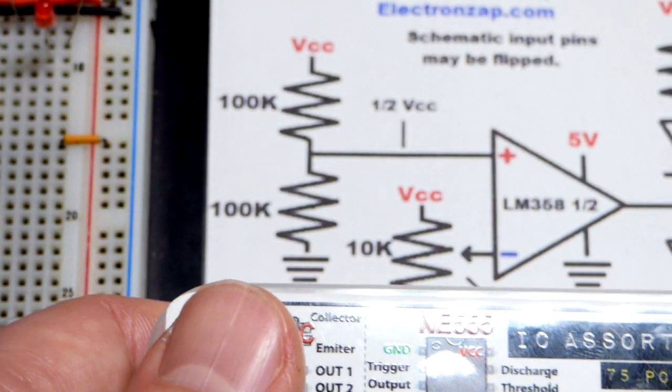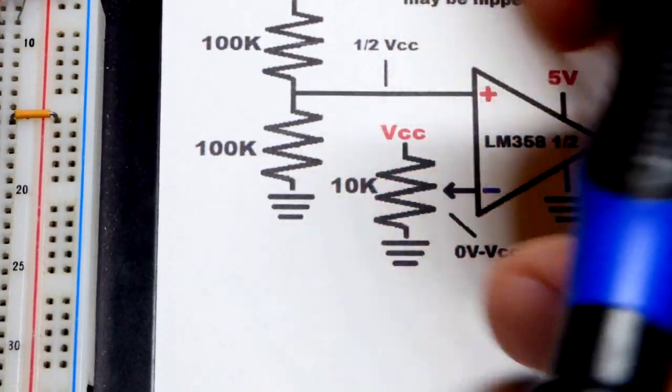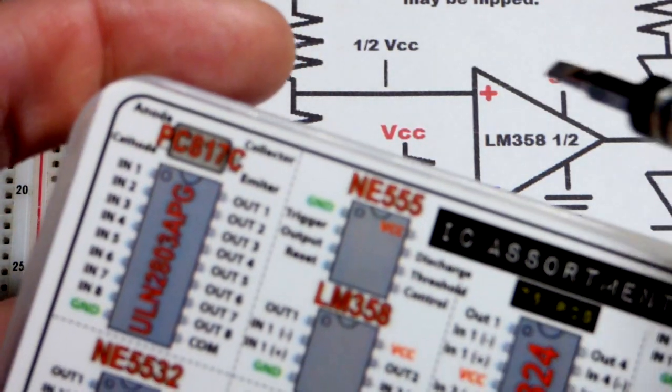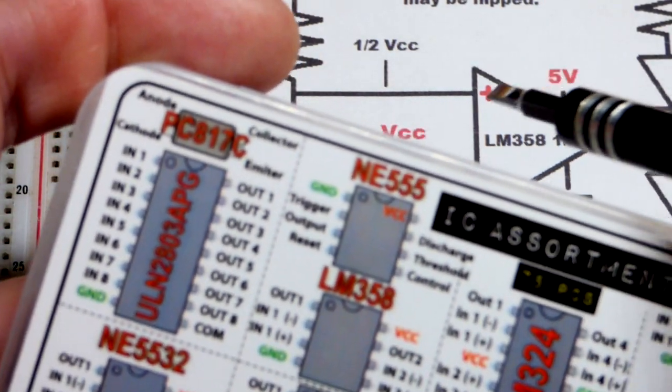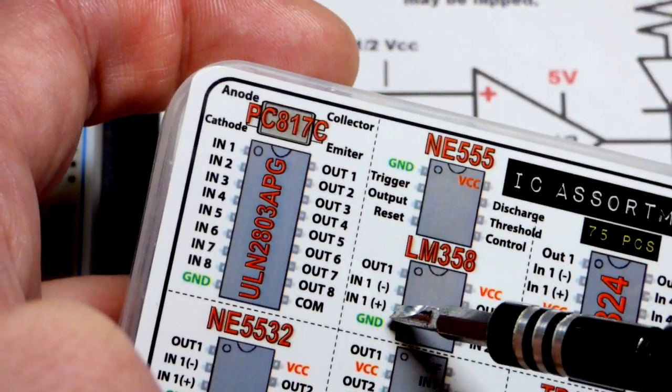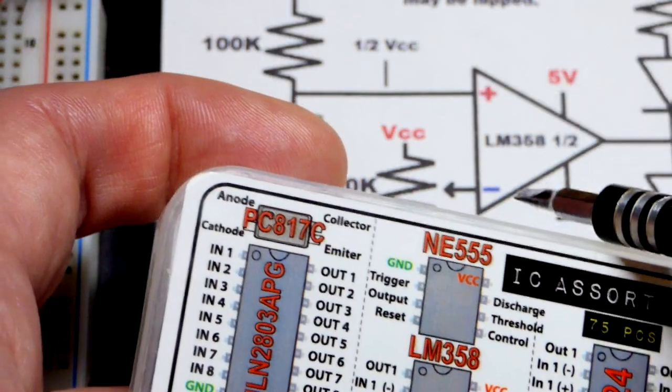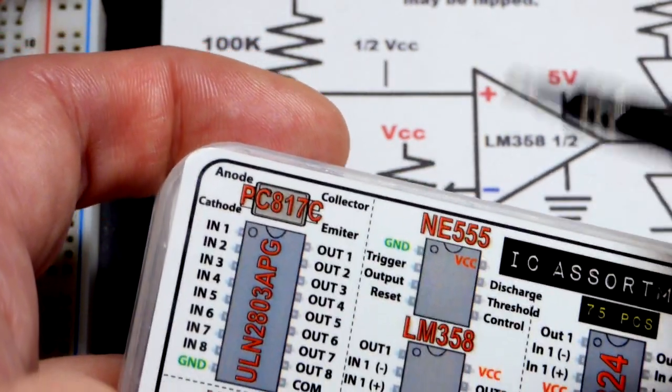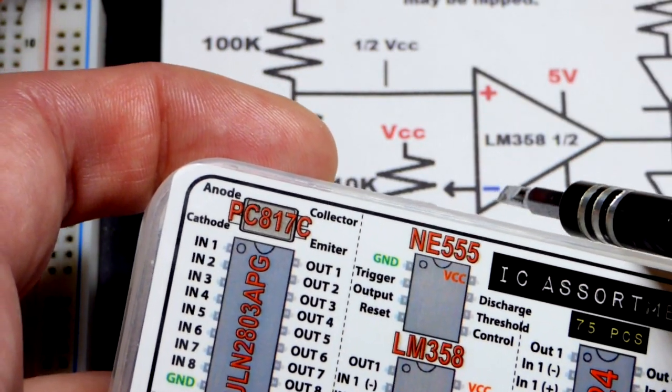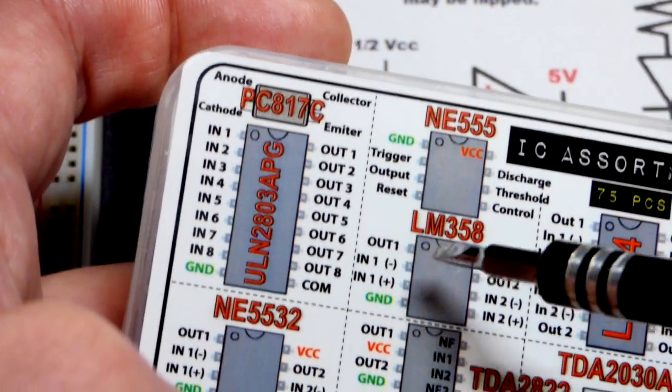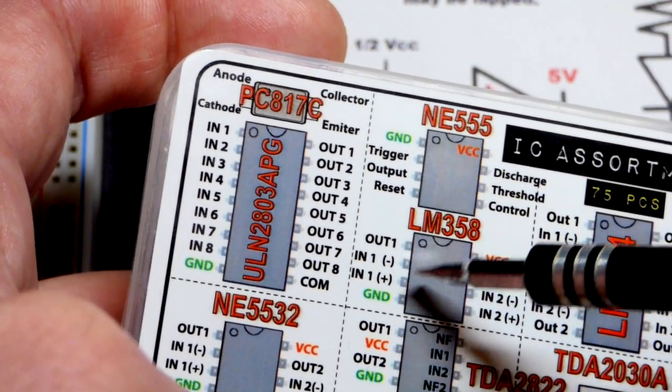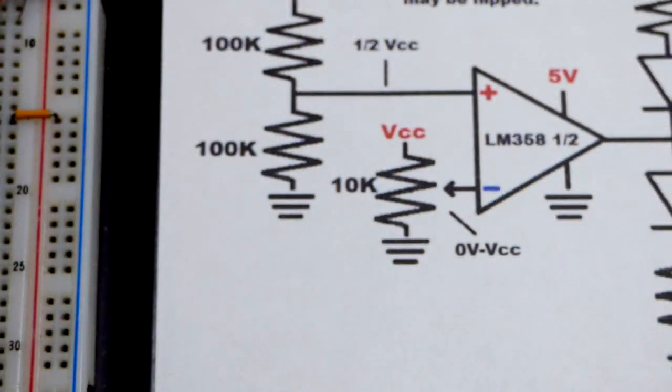You'll notice that the inputs are actually different than what you see on the schematic. The way I drew this, we have the plus up there, whereas the minus is on top of the plus. Plus is on top of the minus there. So you've got to pay close attention to which one is on top and bottom on the schematic and also for the integrated circuit. We have to flip them around.